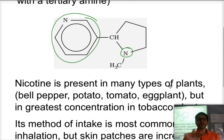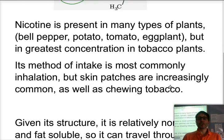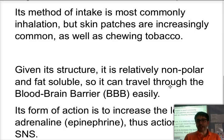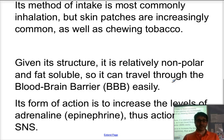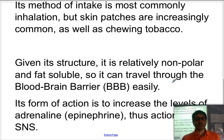Looking at the structure of nicotine, notice it has a lot of carbon-hydrogen bonds and very little polarity. Overall it is a very non-polar molecule. Because it's so non-polar and fat soluble, it can travel through the blood-brain barrier quite easily and therefore affect the brain quite rapidly. It does not mimic the structure of adrenaline, but the way it acts is by helping the formation and release of more adrenaline. By increasing the amount of adrenaline present in the system, it acts on the sympathetic nervous system in the same way we saw for amphetamines.